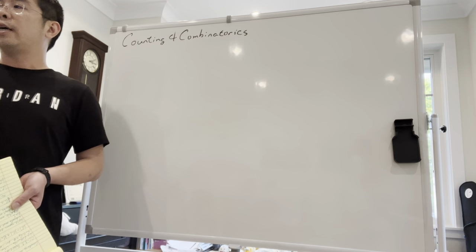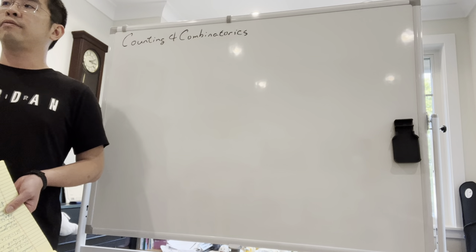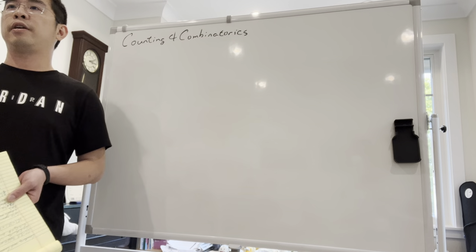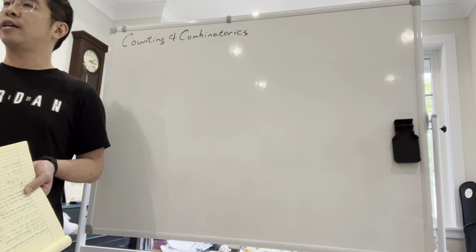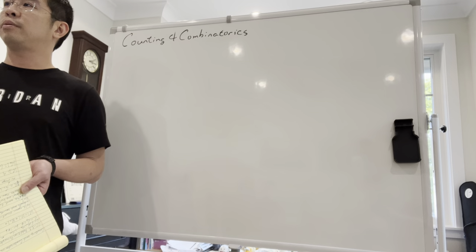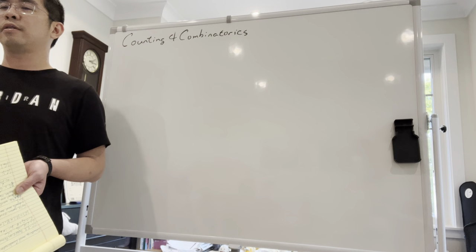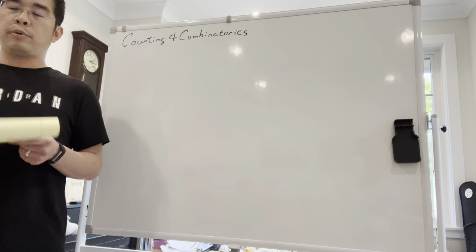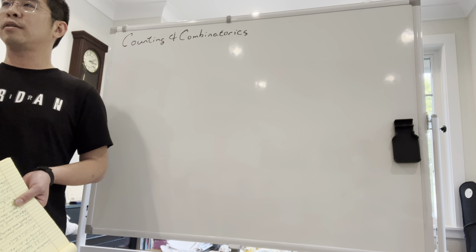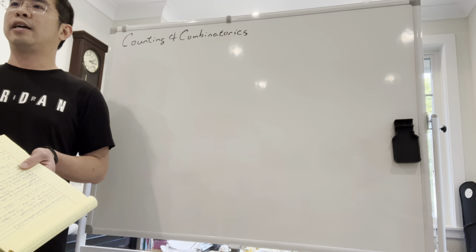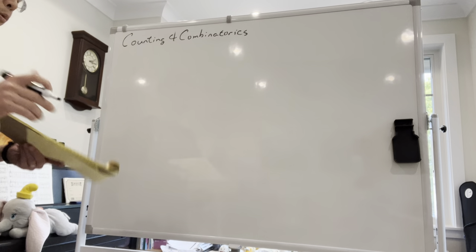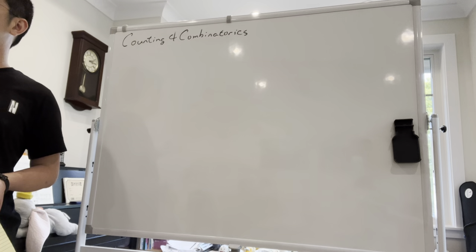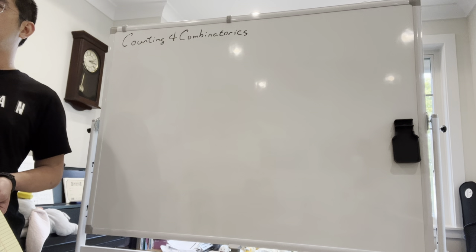As an example, at the beginning of last class we talked about how many different ways there are to arrange seven Harry Potter books on a bookshelf. Someone correctly said that is what is known as seven factorial — seven times six times five down to one. But what we are going to talk about today is something a lot simpler and more basic. I'm going to talk about three principles: addition principle, multiplication principle, and subtraction principle.